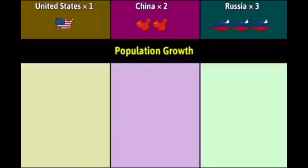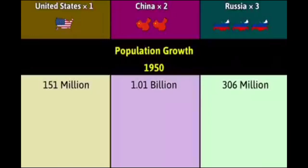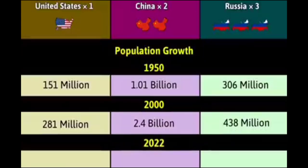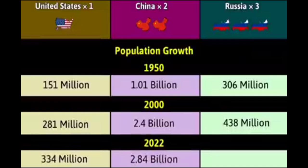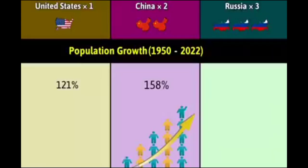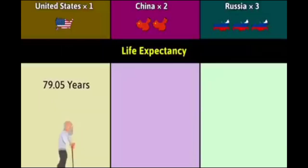Coastline: 29,000 kilometers, 19,924 kilometers, 75,306 kilometers. Population growth — 1950: 151 million, 1.01 billion, 306 million. 2000: 281 million, 2.4 billion, 438 million. 2022: 334 million, 2.84 billion, 435 million. Population growth between 1952 and 2022: 121%, 158%, 42.1%.